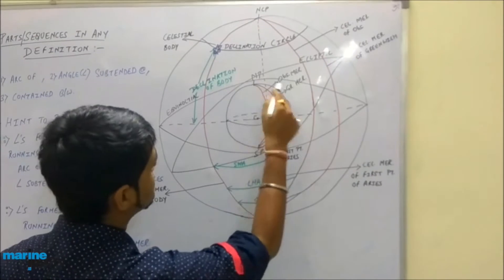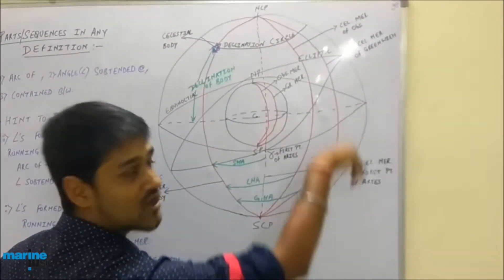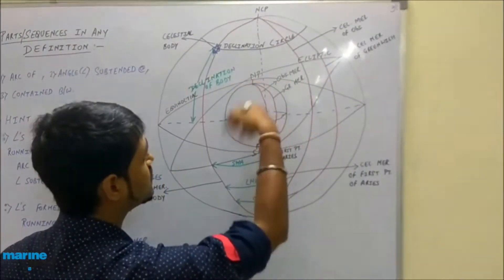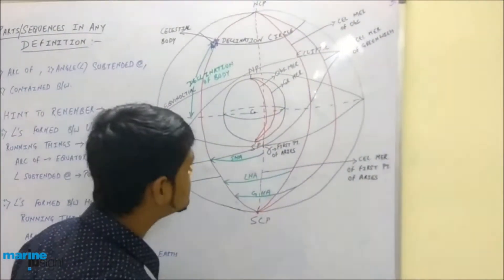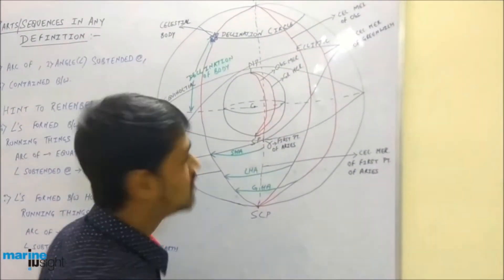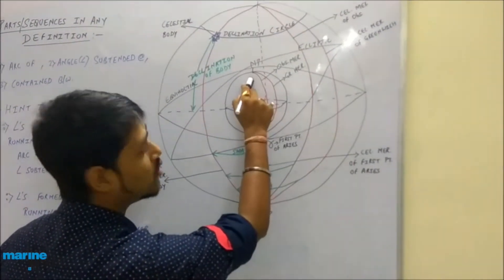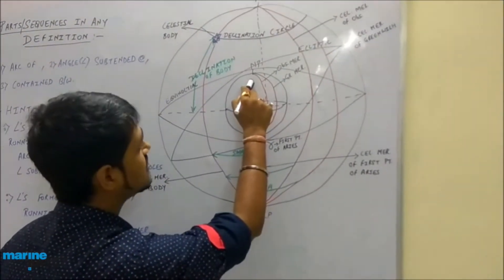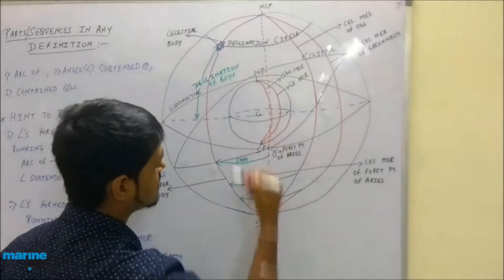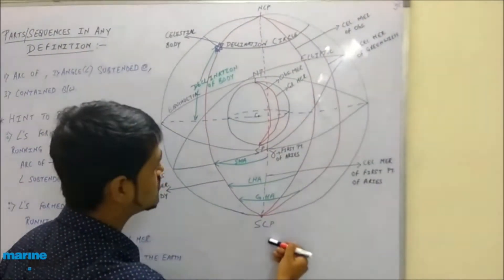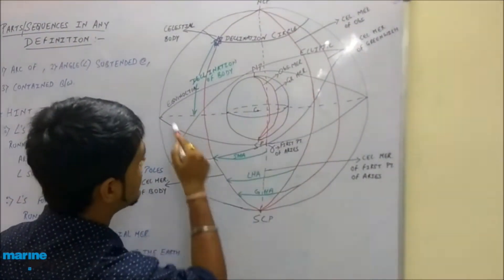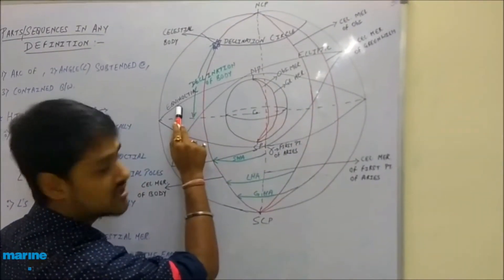The celestial sphere is obtained by the surface expansion of the earth's sphere itself, hence there are a lot of similarities between these two. For example, the north pole on the earth's sphere becomes the north celestial pole, the south pole's extension becomes the south celestial pole, and the equator's expansion becomes the equinoctial.